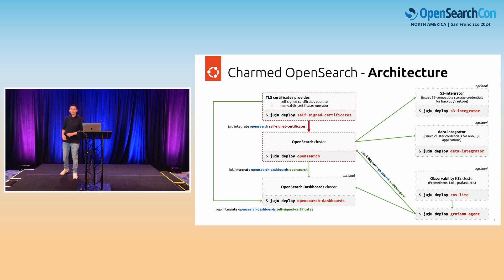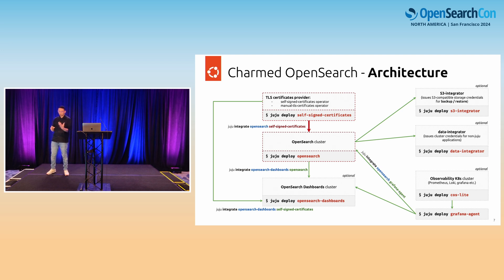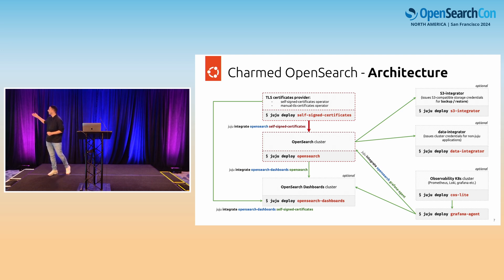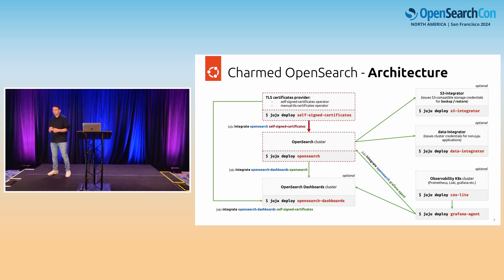The architecture of the Charmed OpenSearch operator: in red are the mandatory components of a deployment. TLS is a central point of such a deployment — the TLS and all other blocks are also operators. The red arrows indicate mandatory integrations for an OpenSearch deployment to succeed. All the green arrows are effectively optional charms to deploy if we want to enrich and expand further on this deployment.